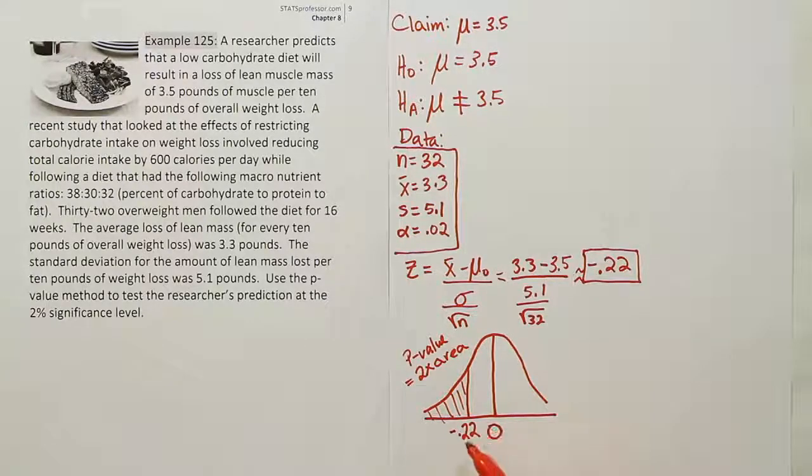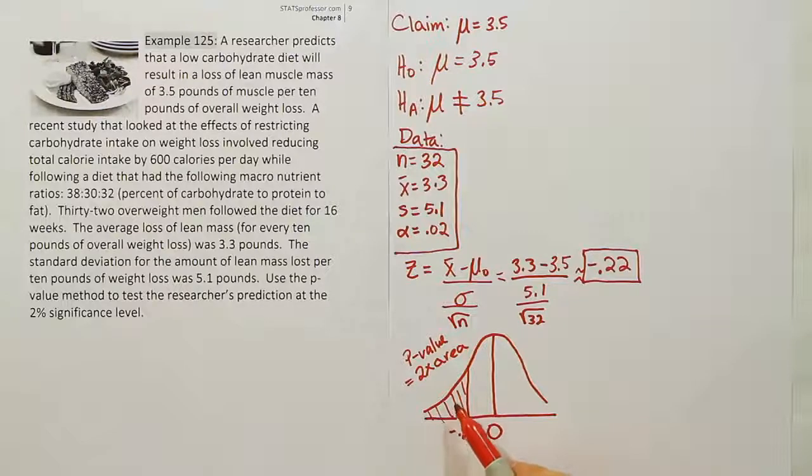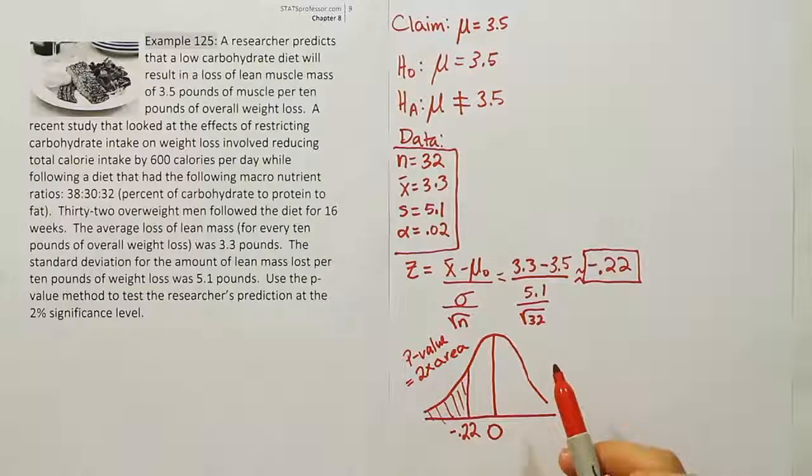Let's try to figure out what the area is. We're going to look up 0.22 on our z-chart and get the area from here to the center, then we'll do 0.5 minus that area to figure out the tail area. Once we have that, we'll double it.